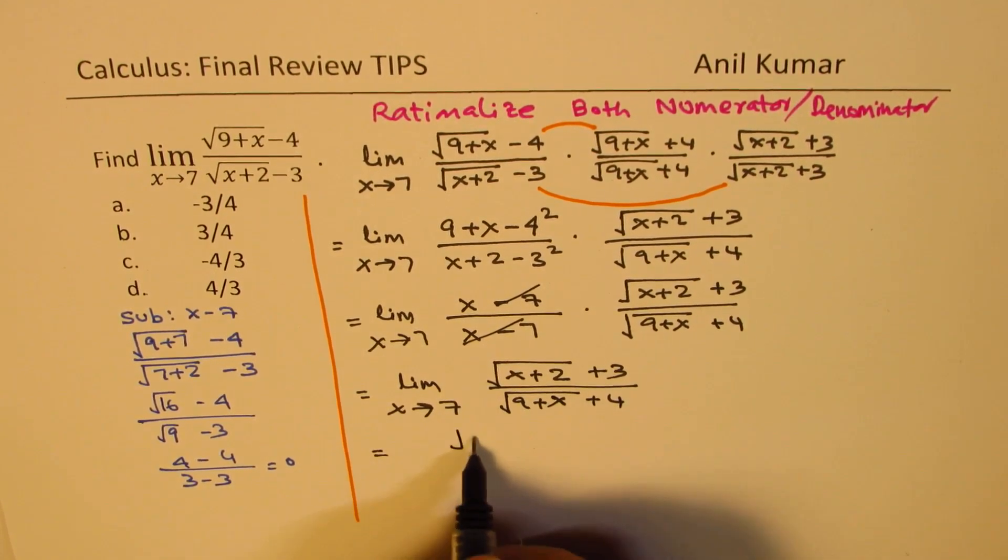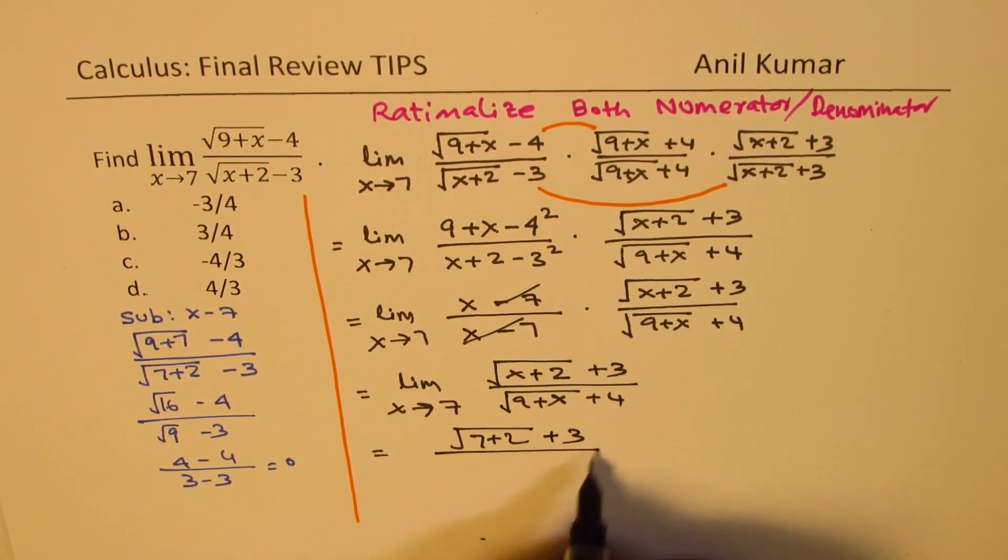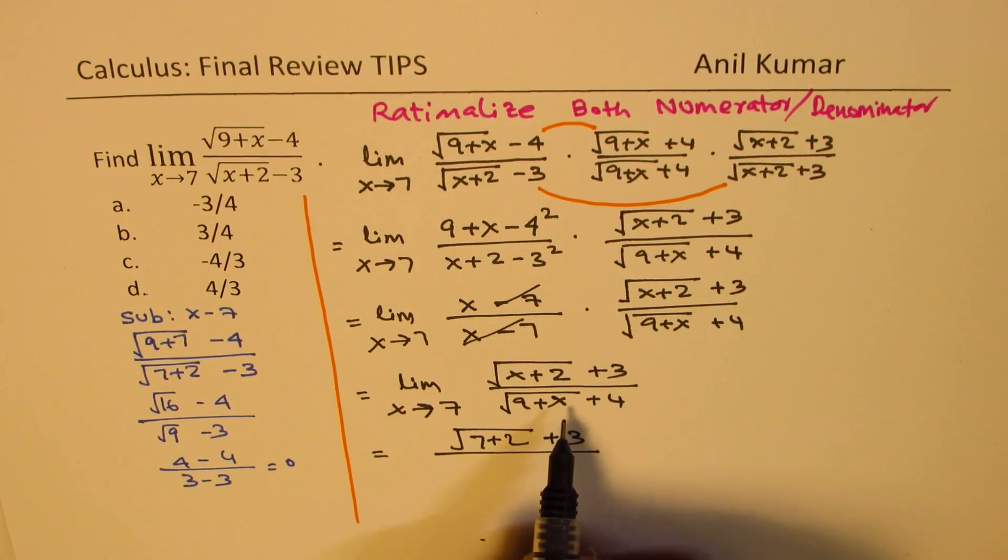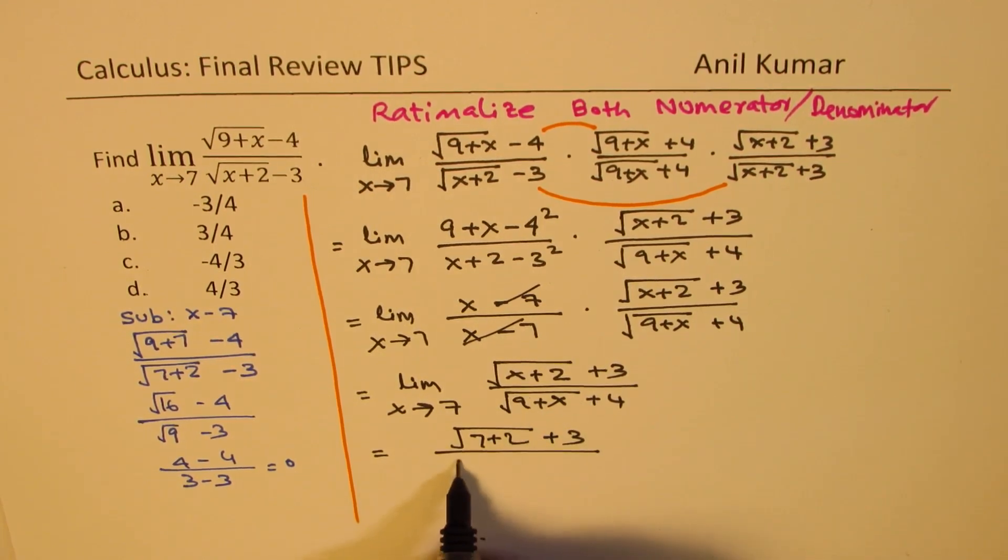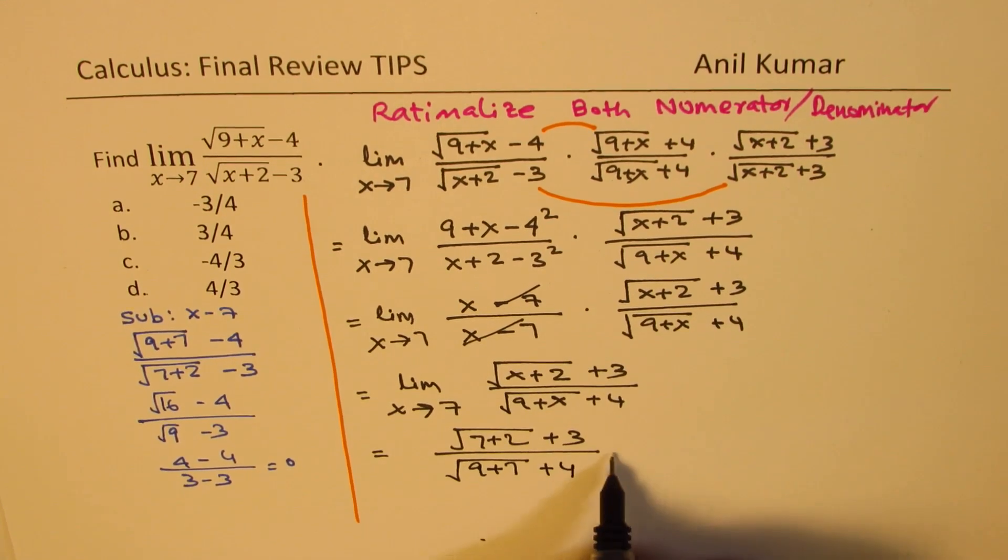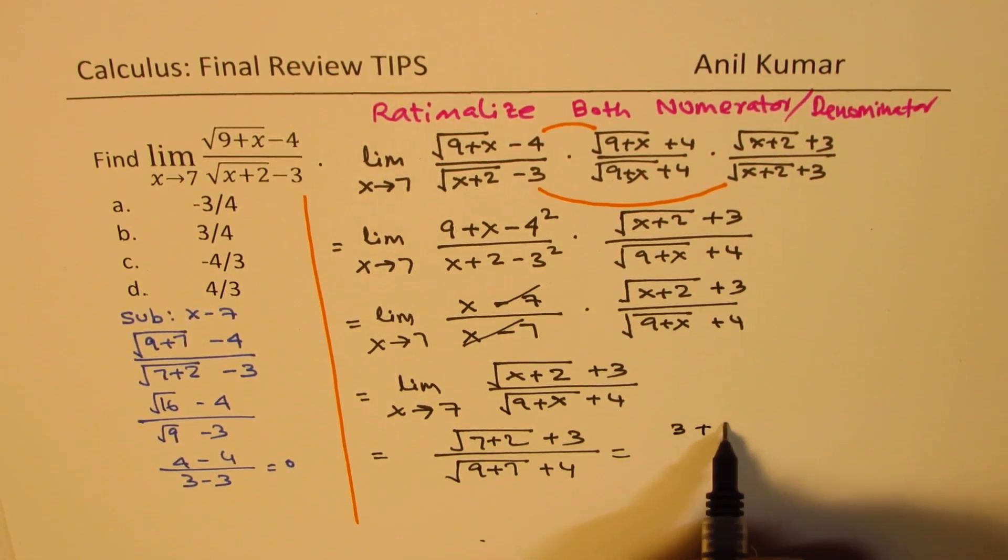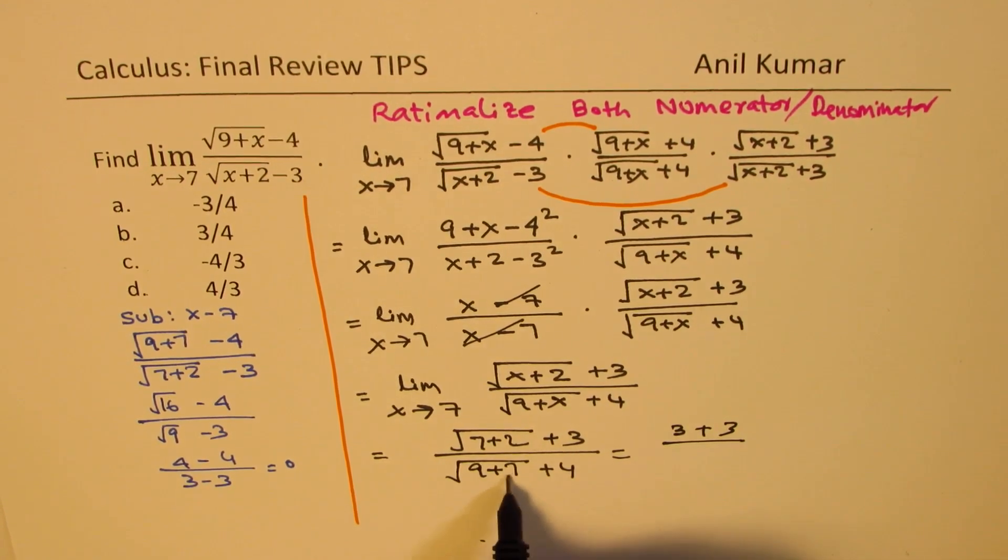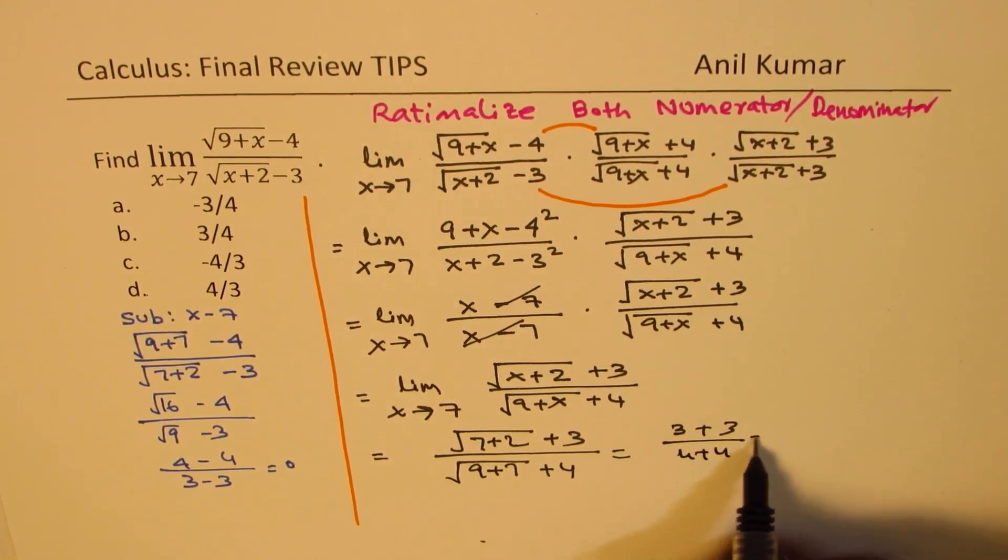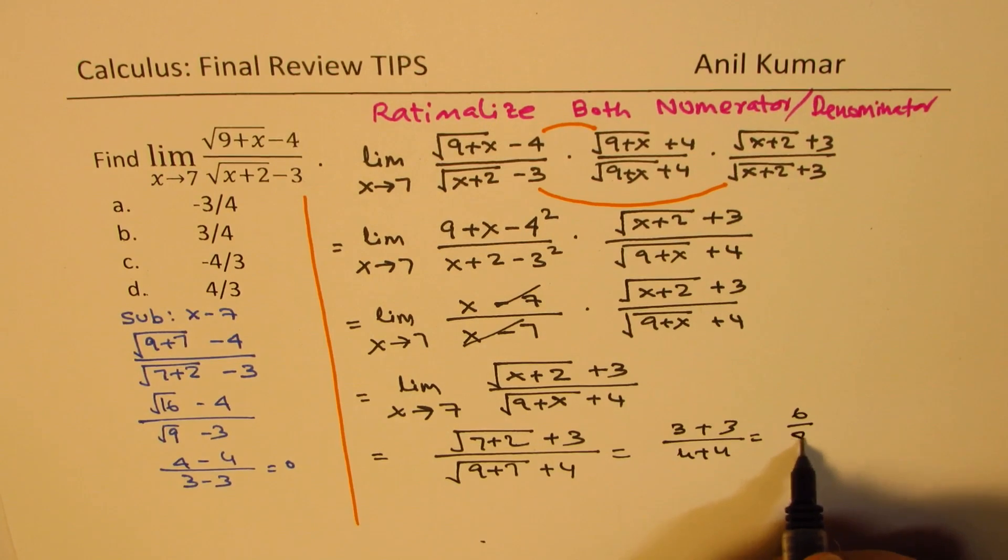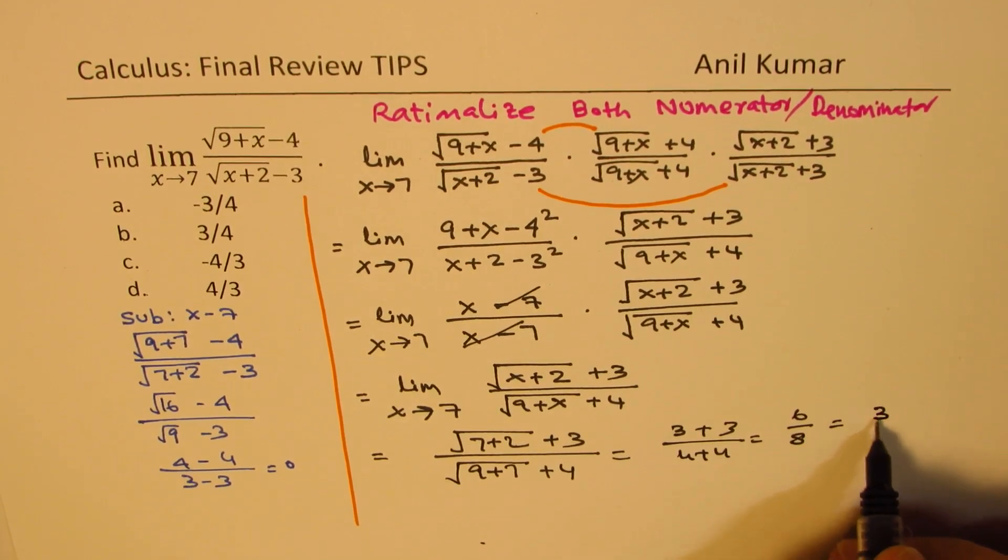Substituting 7 now, we get 7 plus 2, plus 3, over square root of 9 plus 7, plus 4. So that is 9, so we get 3 plus 3, which is 6. Here we get 16 square root, which is 4 plus 4, which is 6 over 8, or 3 over 4.